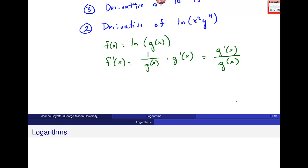In this particular function, my g(x) is this inside piece: g(x) is x² times y⁴. Now in order to use this formulation for natural log, I just need to find what is g'(x).